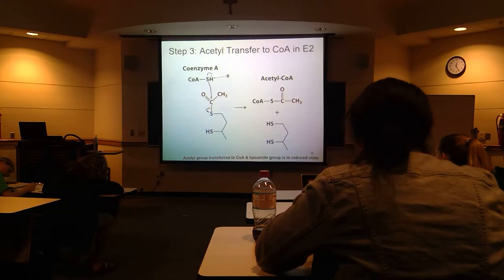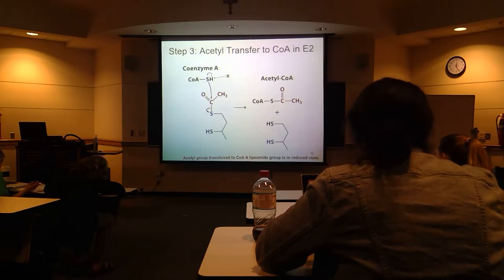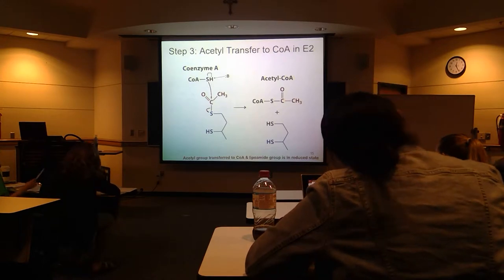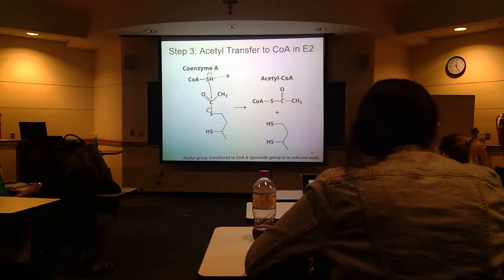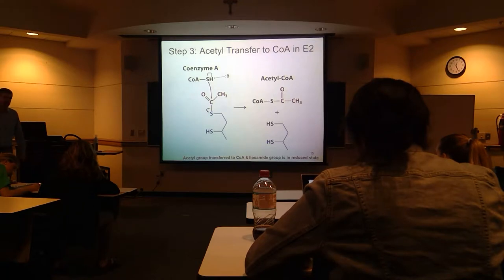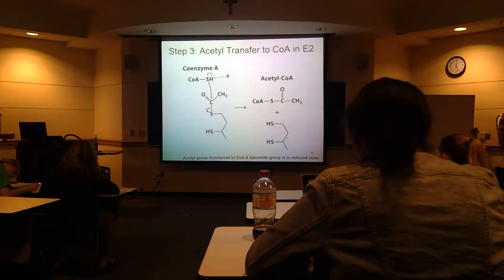This is the primary reason why we're talking about this complex — because we start with pyruvate and we produce acetyl-CoA. Everything else from now on in this complex is to get everything back to its starting point so that further pyruvates can react with it. Enzyme active sites need to be reconverted back to normal — for example, this is going to need to get back to normal with other cofactors too.